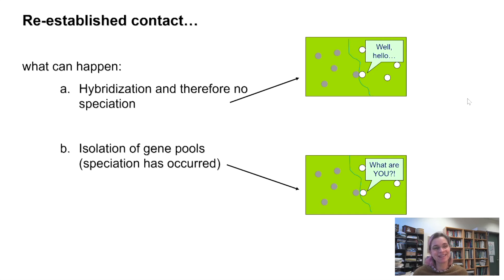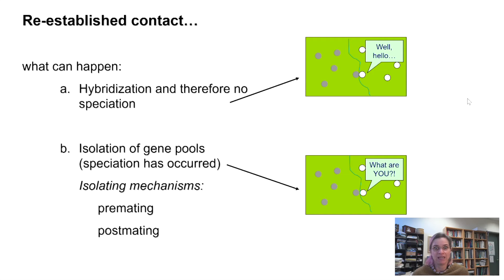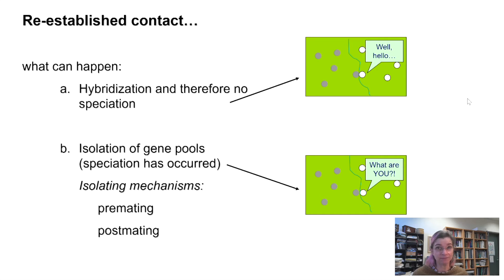There are two ways this isolation can happen: isolating mechanisms can be pre-mating or post-mating. Examples of pre-mating isolation include time of activity — maybe one group is active only in the evening and the other only in the morning, so they never cross paths. Or they may have different mating calls or dances and don't find each other attractive. Or perhaps they find each other attractive, but the parts don't work together — they can't copulate, or the sperm can't access and fertilize the egg.